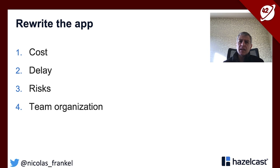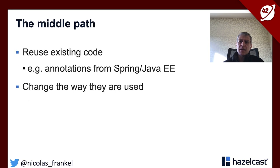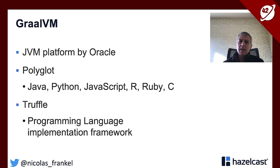So those are four reasons why rewriting the application might not be such a good idea. If lift and shift is not good and rewriting is not good, we don't have much choice. We probably have a middle path — reuse the existing code, especially annotations from Spring and JavaEE, but change the engine that uses them to a non-traditional engine. Before I go further, let me introduce GraalVM.